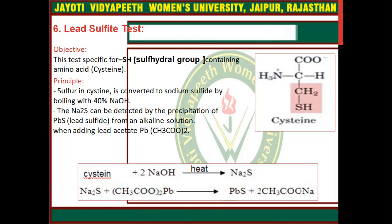When adding lead acetate, you can see that if we boil cysteine with NaOH it will yield Na2S. This Na2S will react with lead acetate and give PbS. This PbS precipitate gives the positive result.